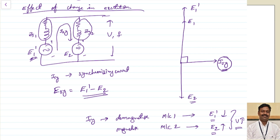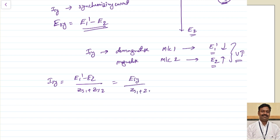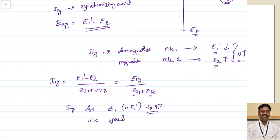This is what happens when you change the excitation, and this can be understood using equations. Isy equals E1 dash minus E2 divided by Zs1 plus Zs2, which I can write as Esy divided by Zs1 plus Zs2. Since Zs1 and Zs2 are nearly pure reactive, this Isy lags E1 dash by 90 degrees. We can tell that machine one operates at zero power factor lag.